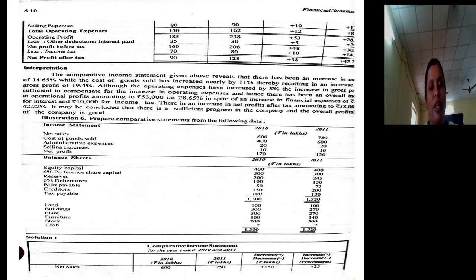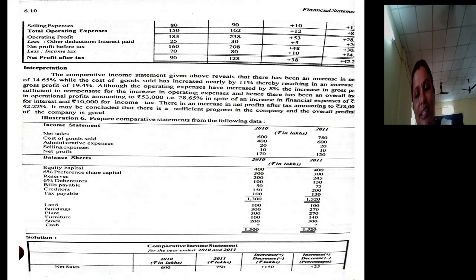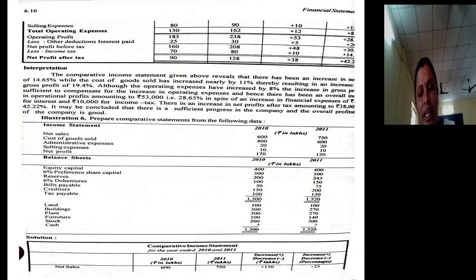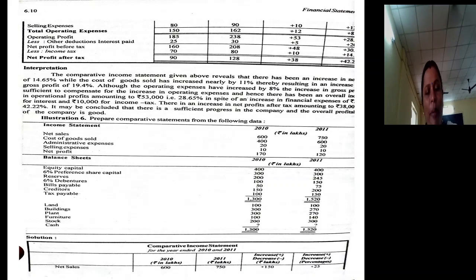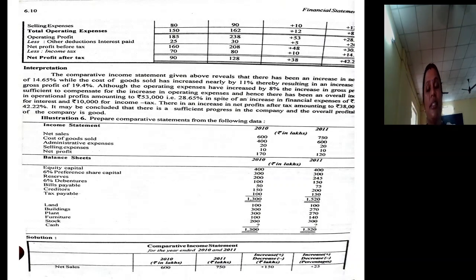Now the interpretation. The comparative income statement reveals that there has been an increase in sales by 14.65%, while cost of goods sold also increased by 11%. Therefore, resulting in an increase in gross profit of 19.4%. Although operating expenses have increased by 8% overall, the increase in gross profit is sufficient to compensate for the increase in operating expenses. There has been an overall increase in operating profit amounting to 53,000 rupees, which in percentage terms is 28.65%.